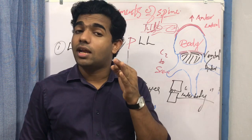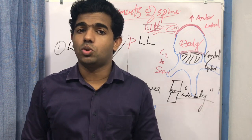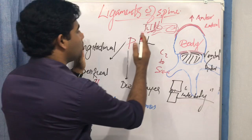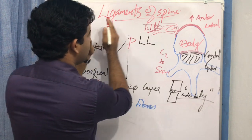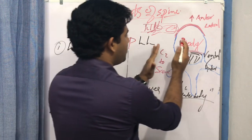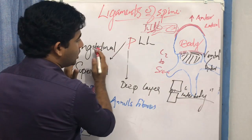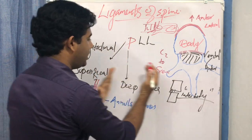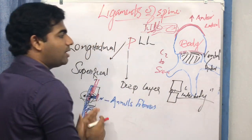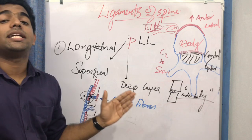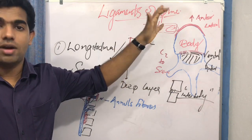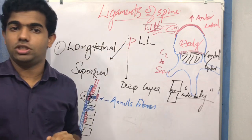A study tip: draw two columns — ALL and PLL — and compare: orientation (sacrum to C2 vs. C2 to sacrum), two fibers each (superficial and deep), states in motion (extension vs. flexion), thickness by region. They are essentially two counterparts of each other.